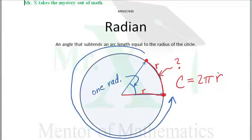Well, if 1 radian gets us r units around the circle, then it would take 2 pi radians to get us all the way around the circle.